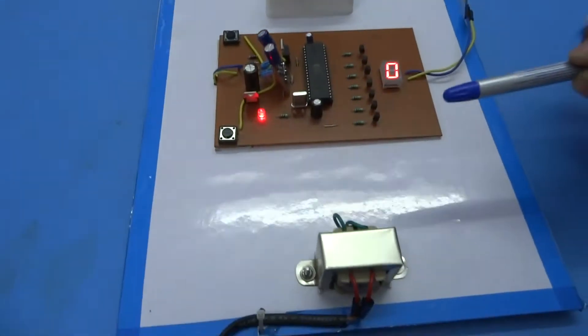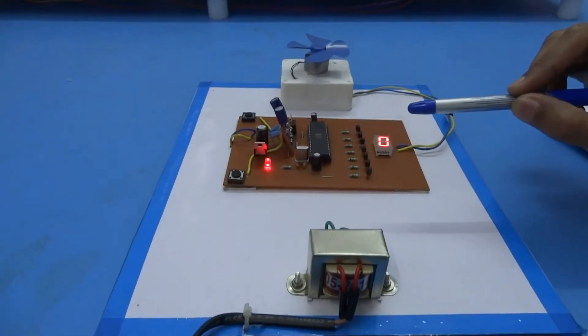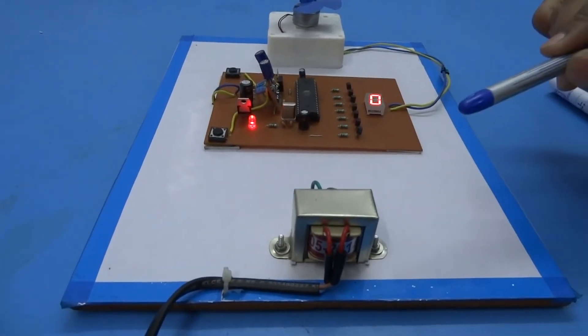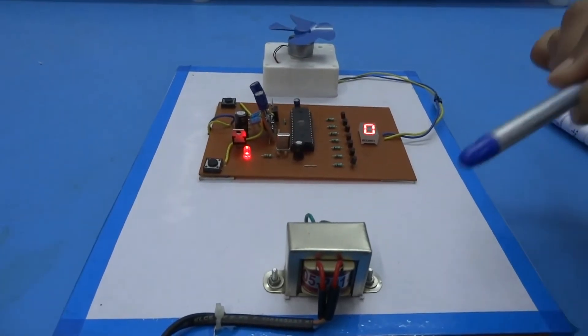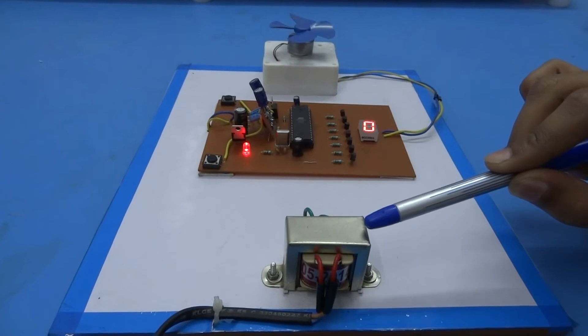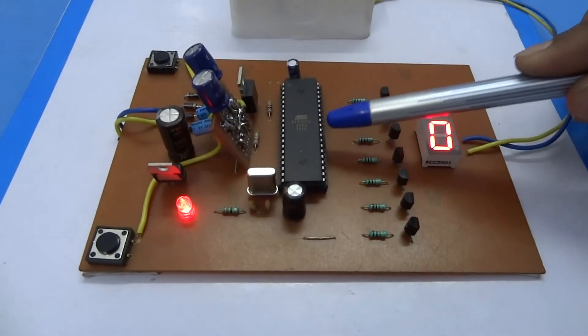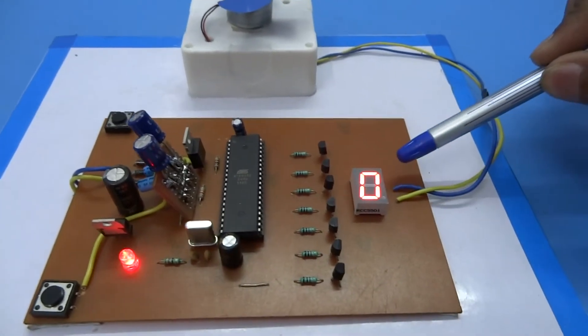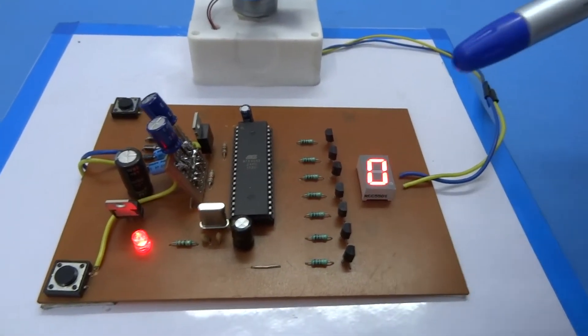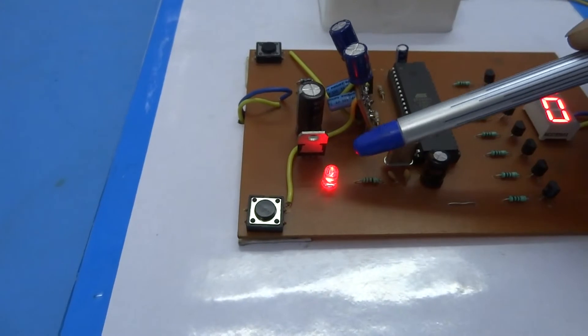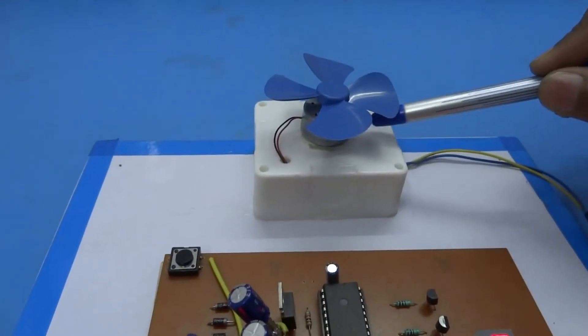This is a DC motor speed control project using microcontroller 8051. In this project we are using a step down transformer, microcontroller 8051, 7 segment display, voltage regulator IC 7805, and a 5 volt DC motor.